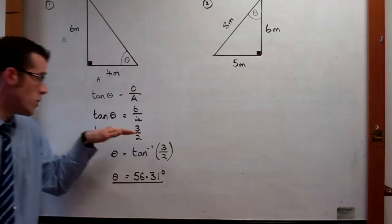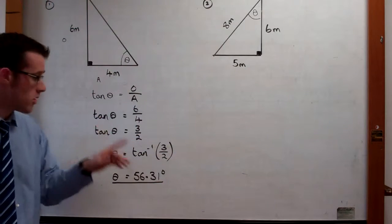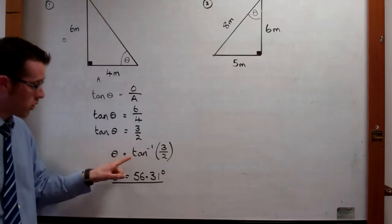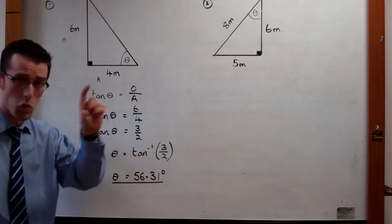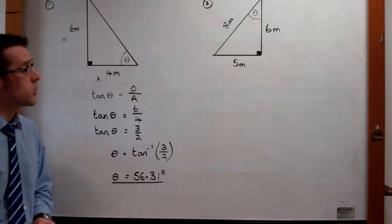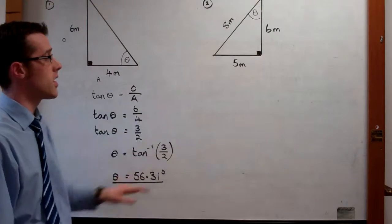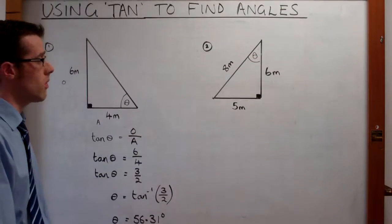So down to here it's quite simple. Then we get to this point and we use the shift button: press shift tan, 3 over 2, and this should come up with the calculated answer. Now let's move on to example 2.